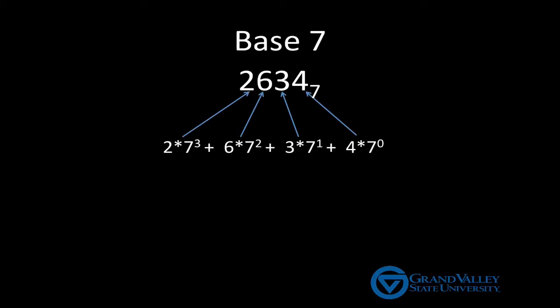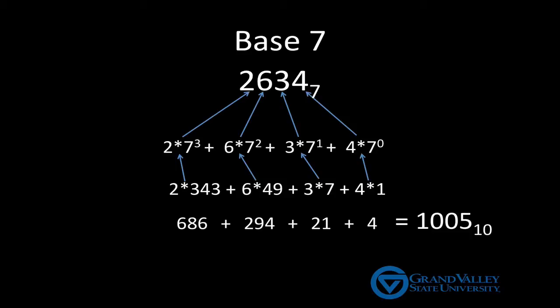When we expand out the powers of 7, we see that it is 4 times 1 plus 3 times 7 plus 6 times 49 plus 2 times 343. Which, when we multiply this out and add it up, we see that 2, 6, 3, 4 base 7 is the same as 1005 base 10.